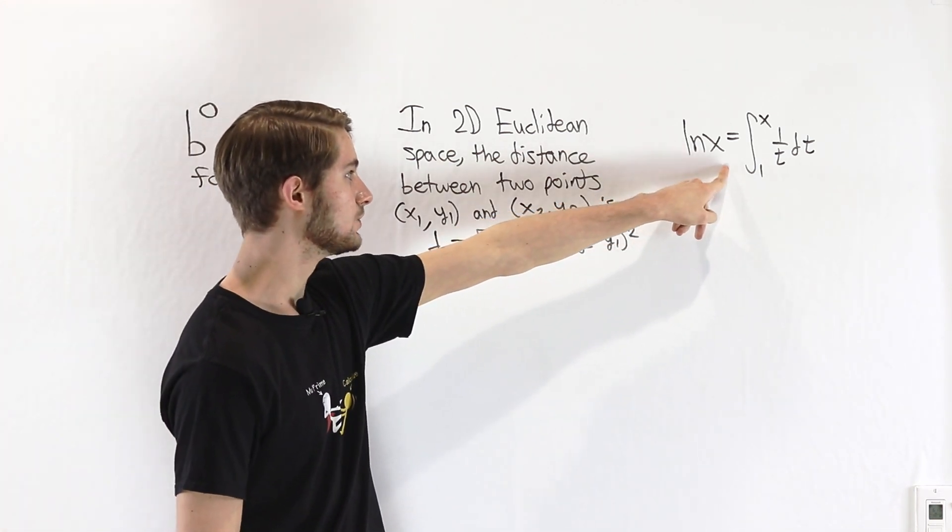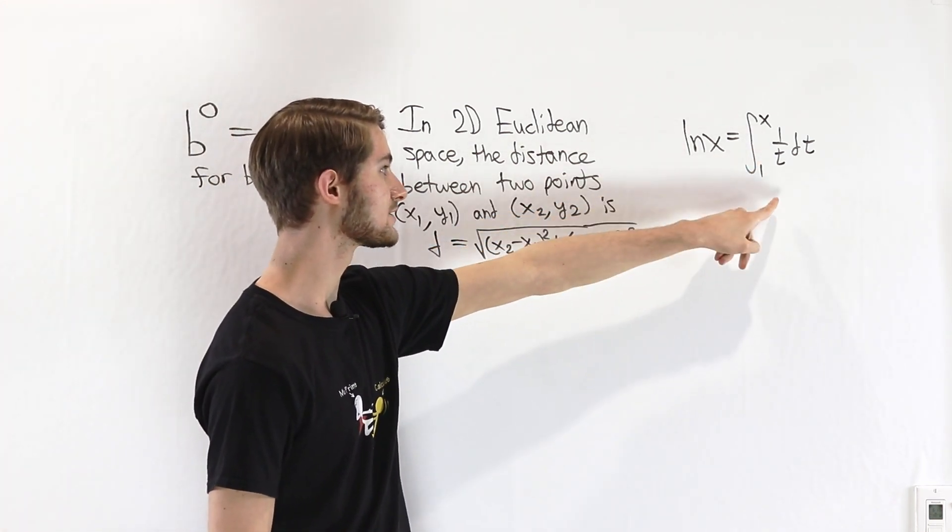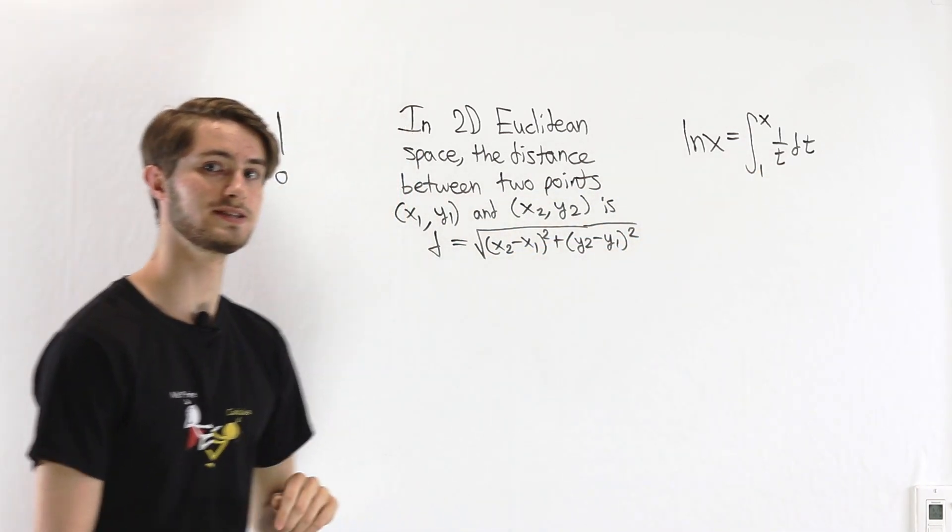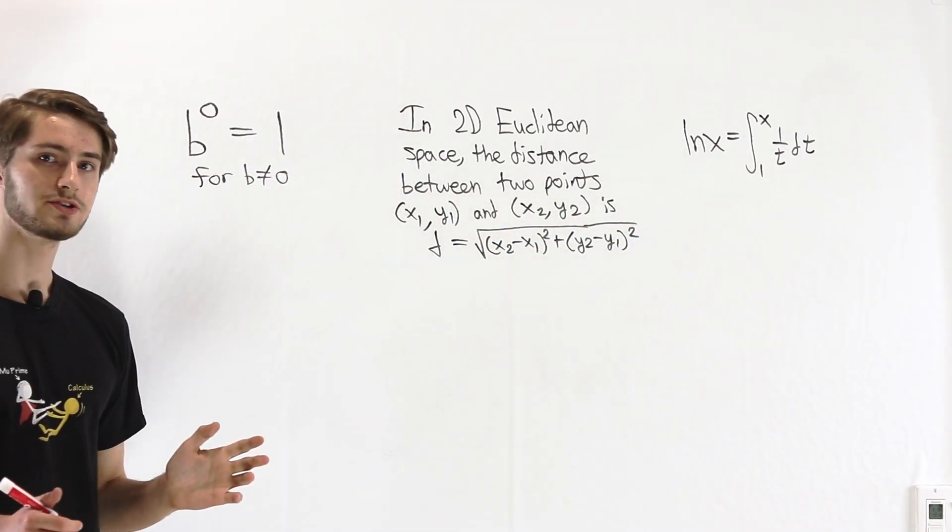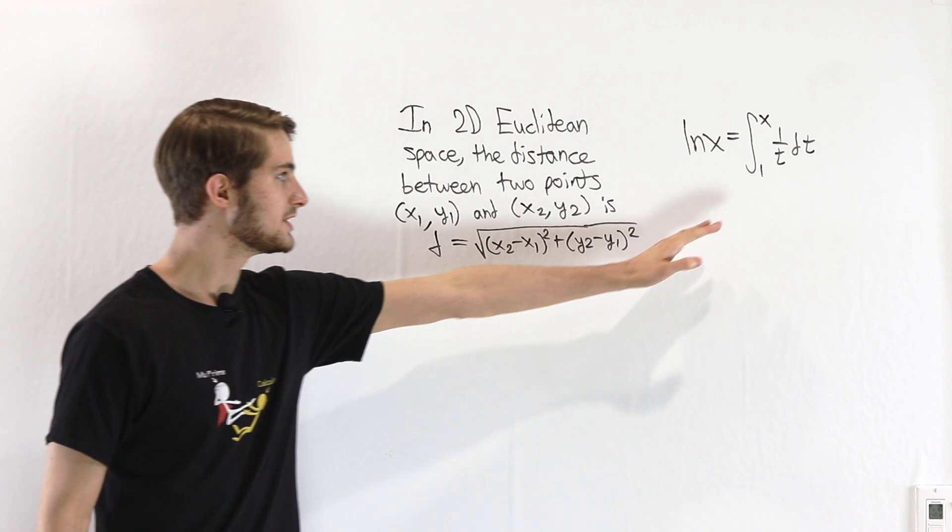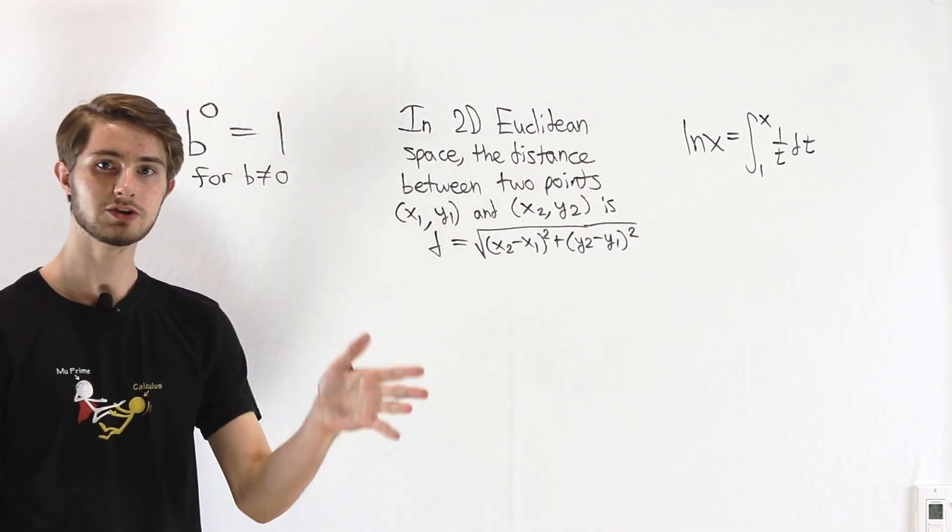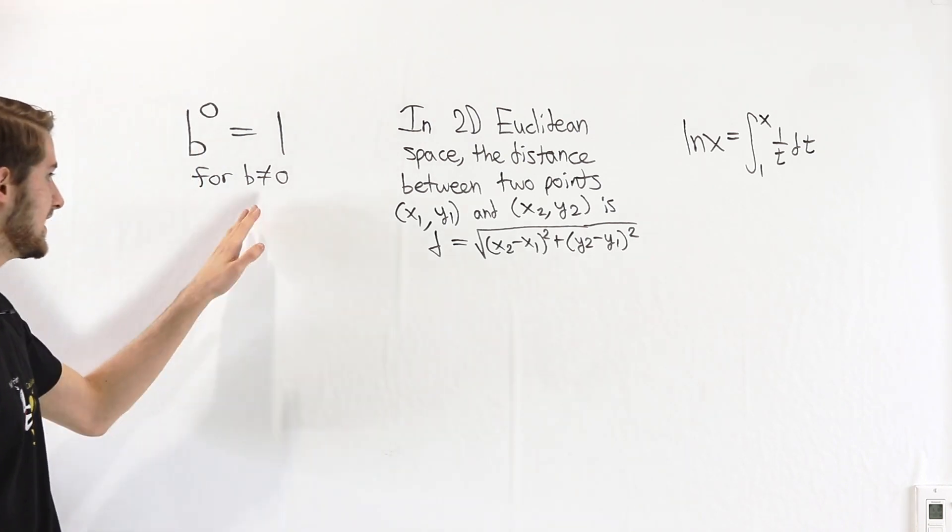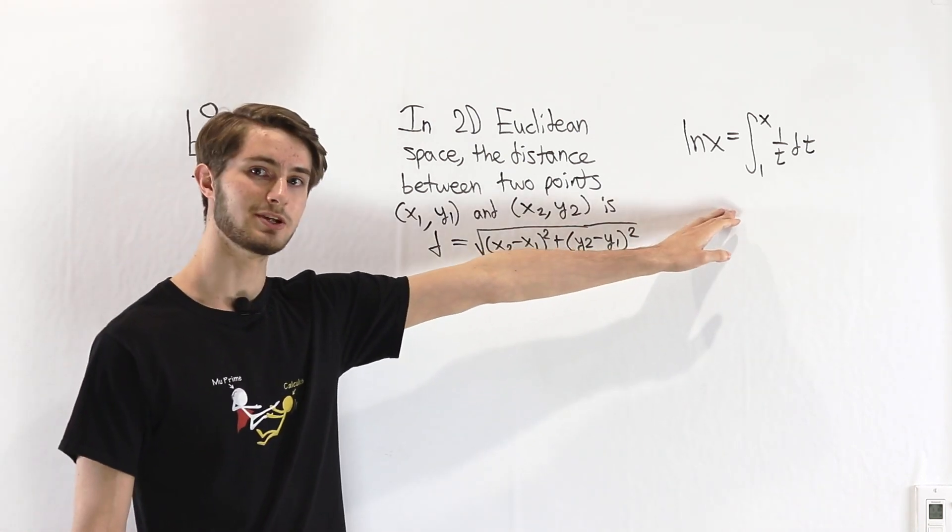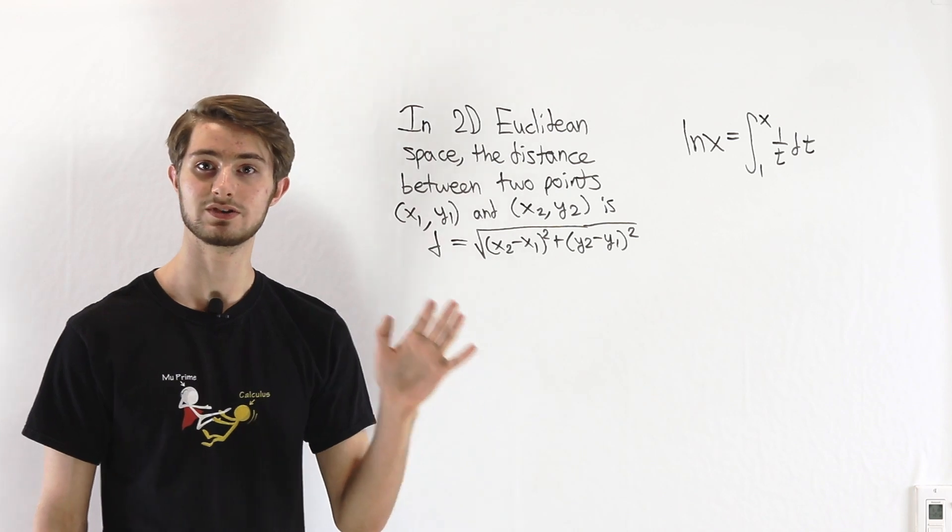the natural log of x equals the integral from 1 to x of 1 over t dt. So here's a question: Which of these statements is a definition and which is a theorem? Pause for a minute and think about an answer for each one of these statements. Is it a definition or is it a theorem?